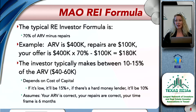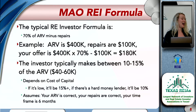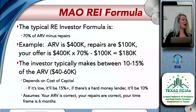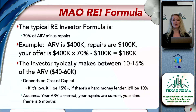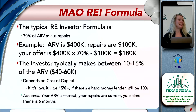A lot of you may know the formula but not know how much you make by applying it. Investors typically make somewhere between 10 to 15% of their ARV — which on a $400,000 deal is somewhere between $40,000 and $60,000. This depends on a few things, starting with your cost of capital.